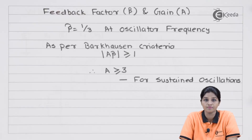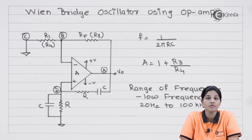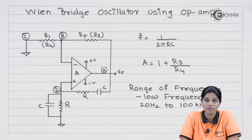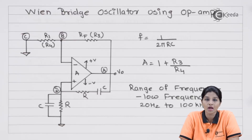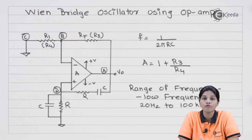Now let's see the Wien bridge oscillator using op-amp. To implement an oscillator circuit, we require one active element and one feedback network. The active element or amplifier can be a FET, a BJT, or an op-amp. In this circuit, we are going to use an op-amp as the active element and the Wien bridge circuit as the feedback network.